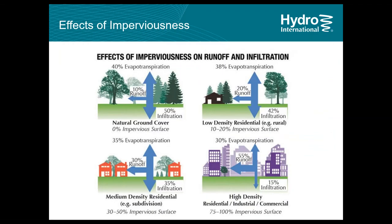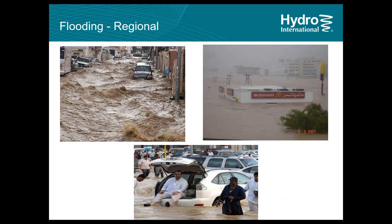As you know, when there is buildup of impervious surfaces such as concrete, there is also an increase in stormwater runoff. In high-density urban development, we can expect up to 55 percent of stormwater as runoff. This of course needs to be managed and drained properly — otherwise flooding scenes become a regular recurrence. So why does this happen?